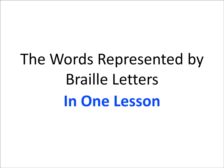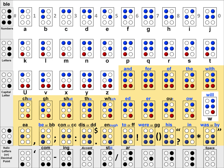This is the words represented by braille letters in one lesson. The only thing missing from our grid of 64 cells now is all of the words that are represented by letters.